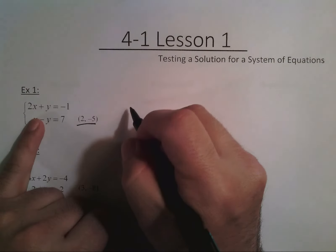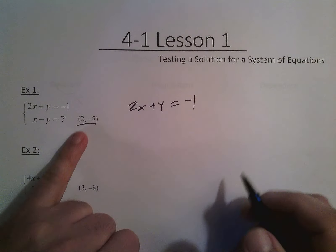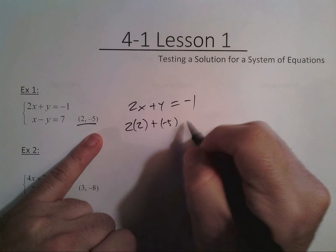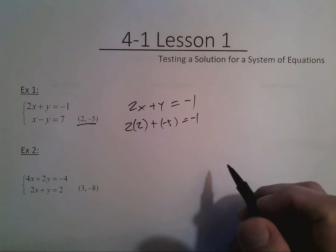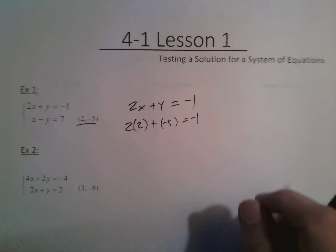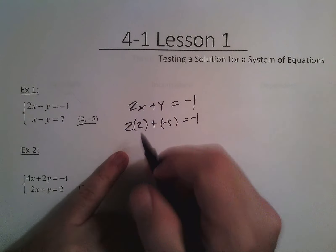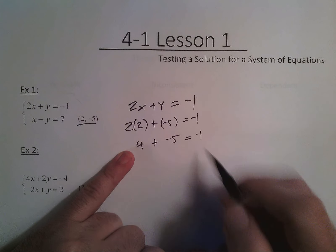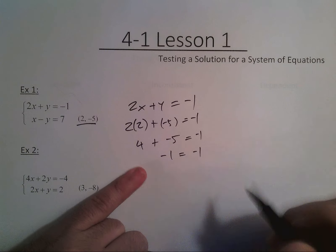So we take the first one, 2x plus y equals negative 1. And now we're going to plug in 2 for x, so it's 2 times 2, plus y, which is negative 5, equals negative 1. You'll notice that I used parentheses around the x and the y replacement. And I do that just as a reminder, that's where I did the substitution when I look back through it. So continuing, we have 2 times 2, which is 4, plus negative 5 equals negative 1. 4 plus negative 5 is negative 1. So yes,